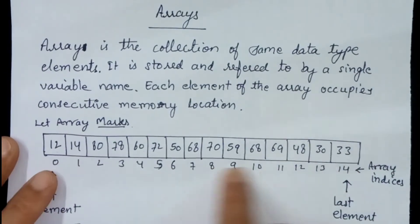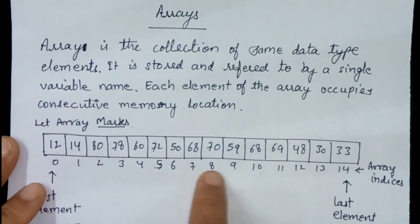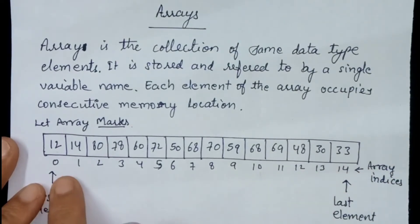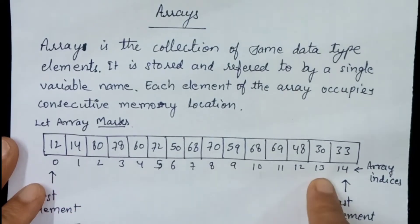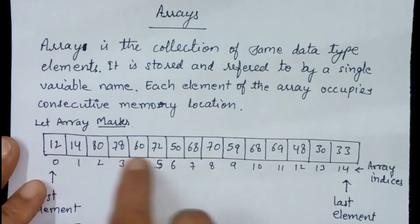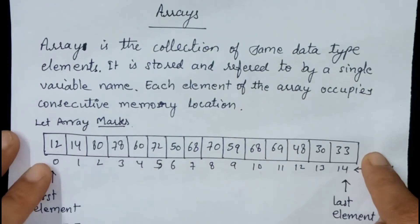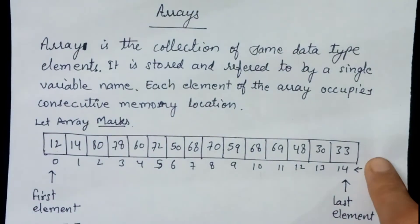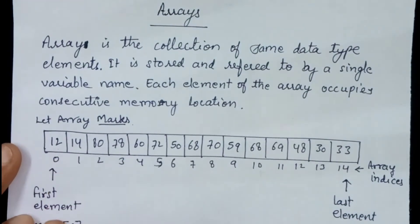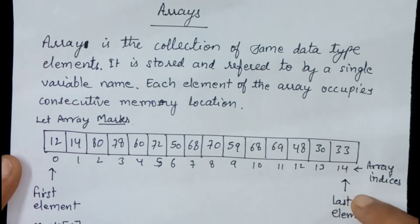This is a one dimensional array represented by the row. These 0, 1, 2, 3 and 4 and so on are the array indices — they show the position of the array element. And 12, 13, 14, 80 and so on are the values of the array elements. Marks is the name of the array. The 0th element is called the first element of the array, and this is the last element of the array.